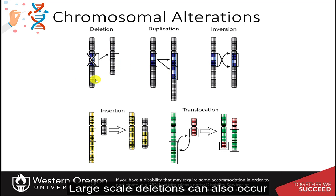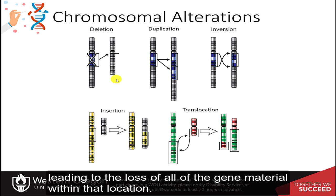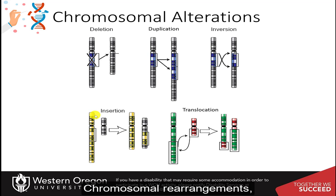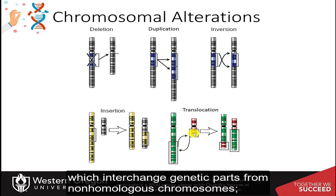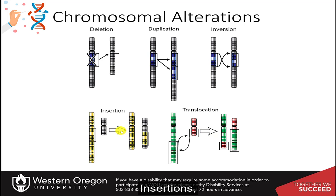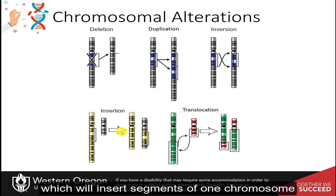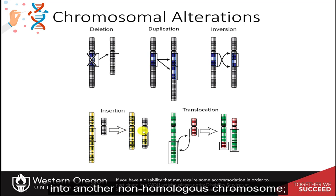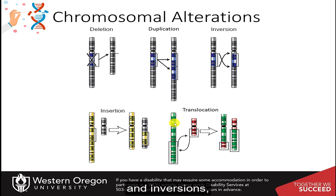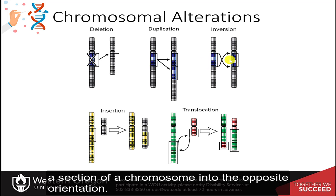Large-scale deletions can also occur, leading to the loss of all of the gene material within that location. Chromosomal rearrangements include translocations, which interchange genetic parts from non-homologous chromosomes; insertions, which insert segments of one chromosome into another non-homologous chromosome; and inversions, which invert or flip a section of a chromosome into the opposite orientation.